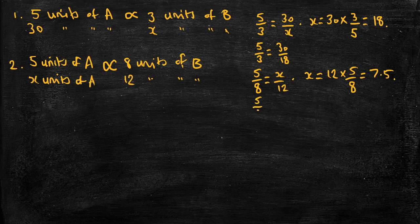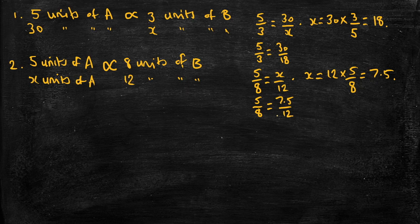X is equal to 12 times five over 8, and that comes to 7.5. We can check we have equivalent fractions: 5 divided by 8 and 7.5 divided by 12 are equal, because if I multiplied five by one and a half I get seven and a half, and if I multiply eight by one and a half I get 12.